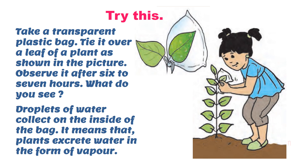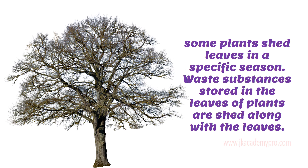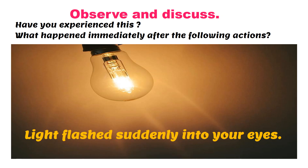Not only animals but plants also throw out the unwanted part of the food they have produced. Some plants shed their leaves in a specific season — during autumn, all the leaves fall off. When the leaves fall, all the waste substances stored in those leaves are shed along with them. This is another way plants throw away unwanted substances.